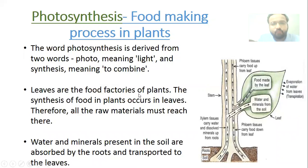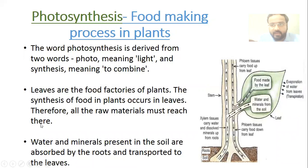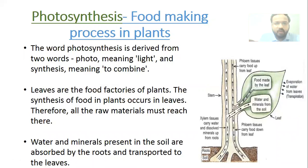Leaves are the food factories of the plant — leaves synthesize food for the plant, so synthesis of food in plants occurs in leaves. Therefore, all the raw materials must reach the leaves: carbon dioxide, water, minerals, and even sunlight must all reach there.